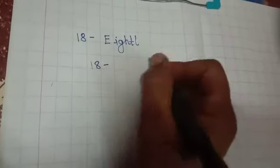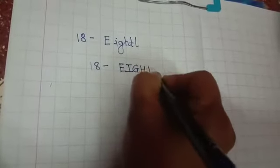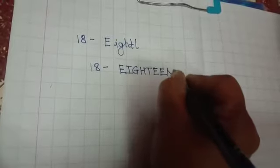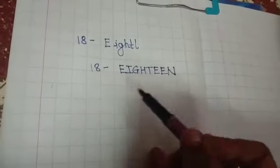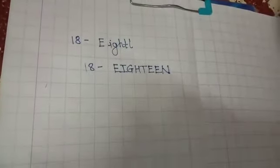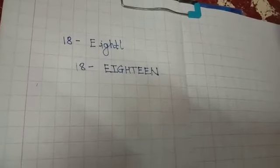Hello everyone, in last video we discussed the number spelling 18. What is the spelling of 18? E-I-G-H-T-T-E-E-N, eighteen. This is the spelling of 18.